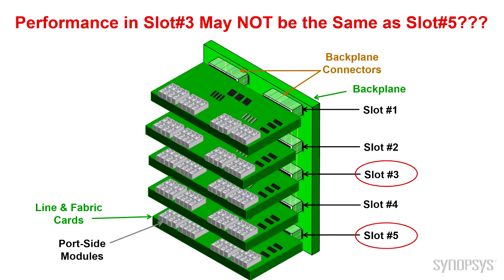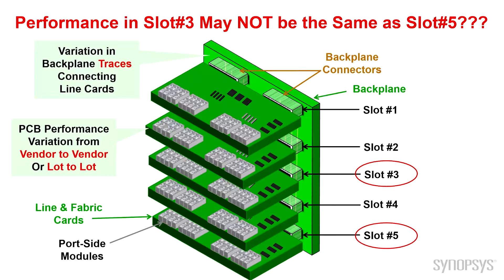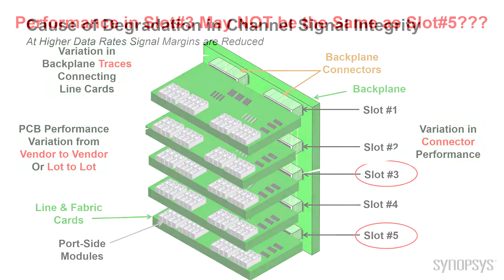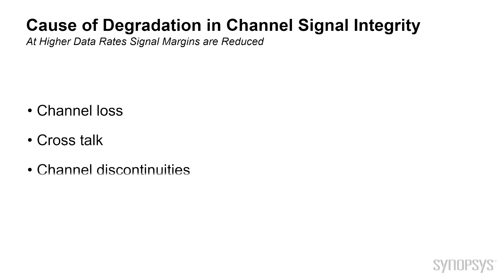As a result, you may have a line card that has issues on slot number three compared to slot number five. This could be as a result of variation in the backplane traces connecting the line cards to the backplane, the connectors. Even the PC board material that you use from vendor to vendor may vary, even with the same technology spec. Even within the same vendor, lot to lot of PC board material may have different performance. And yet, you still have the connector performance variation. All this combined can cause degradation in the channel's signal integrity performance.